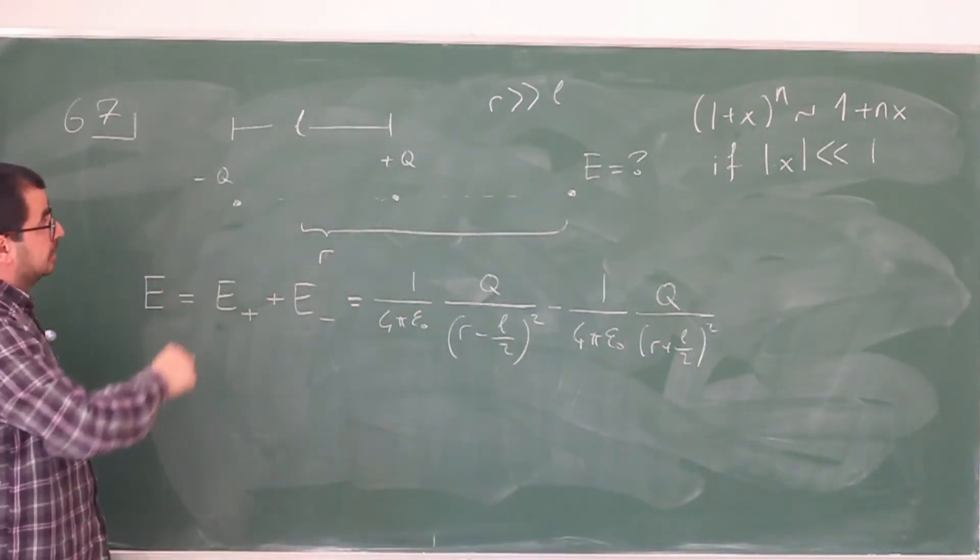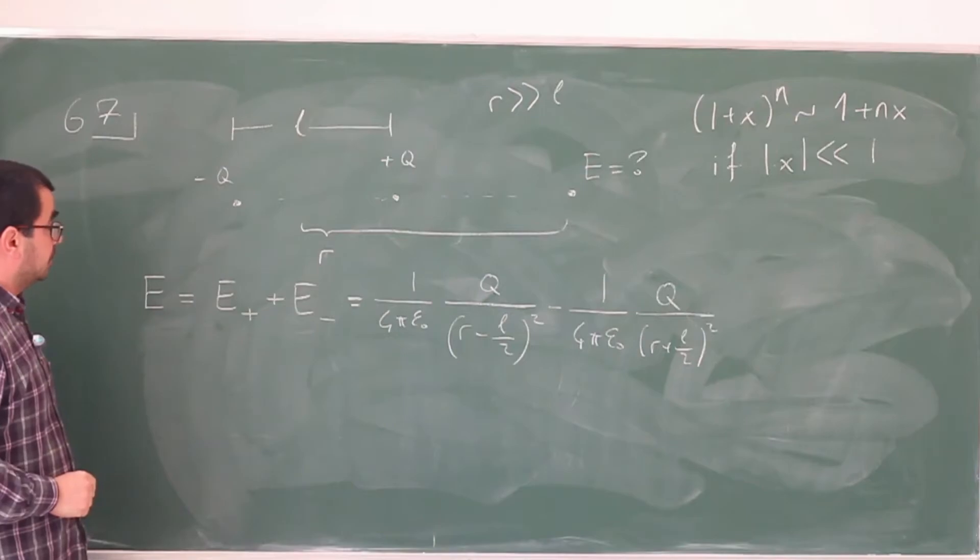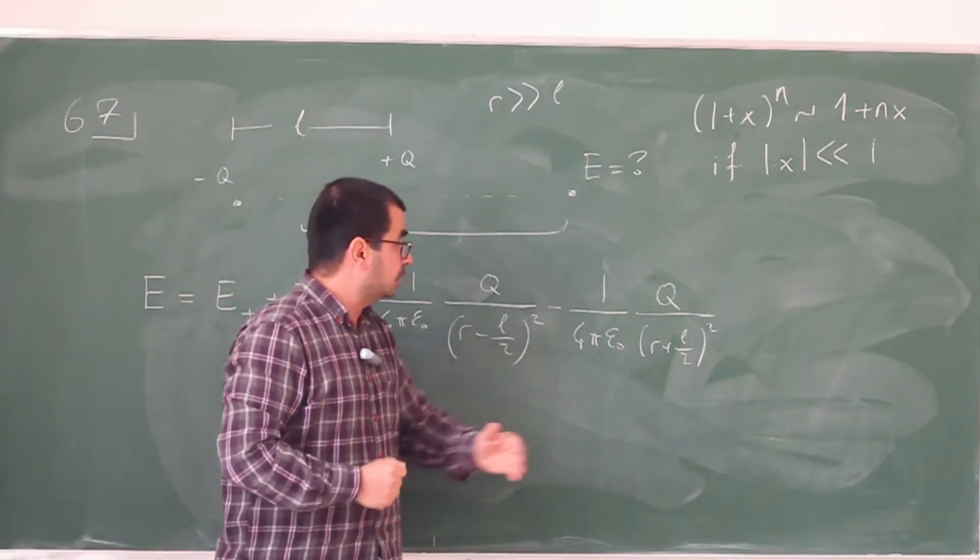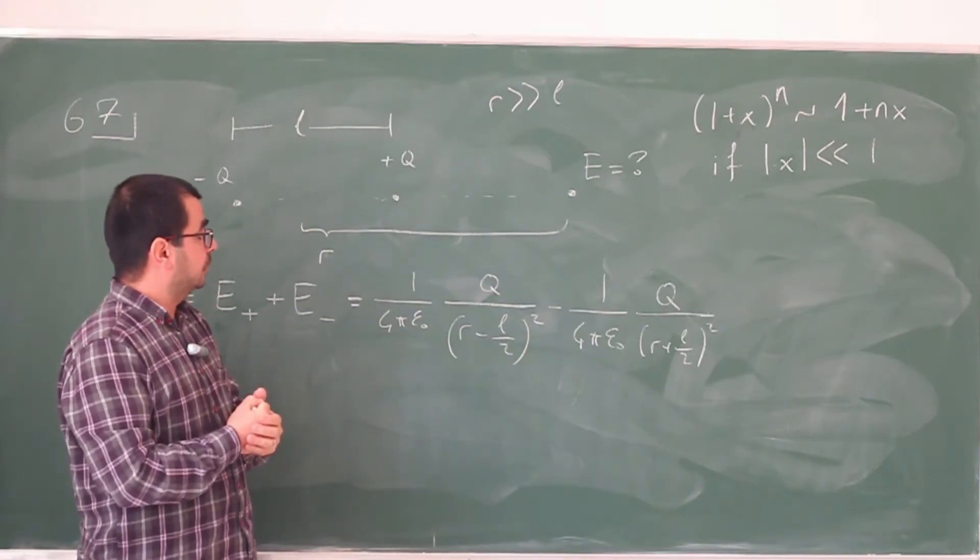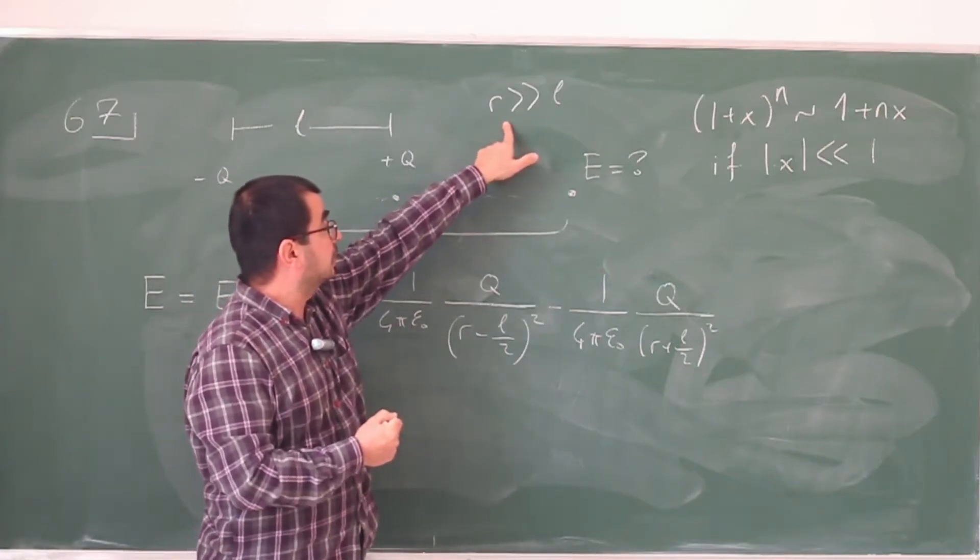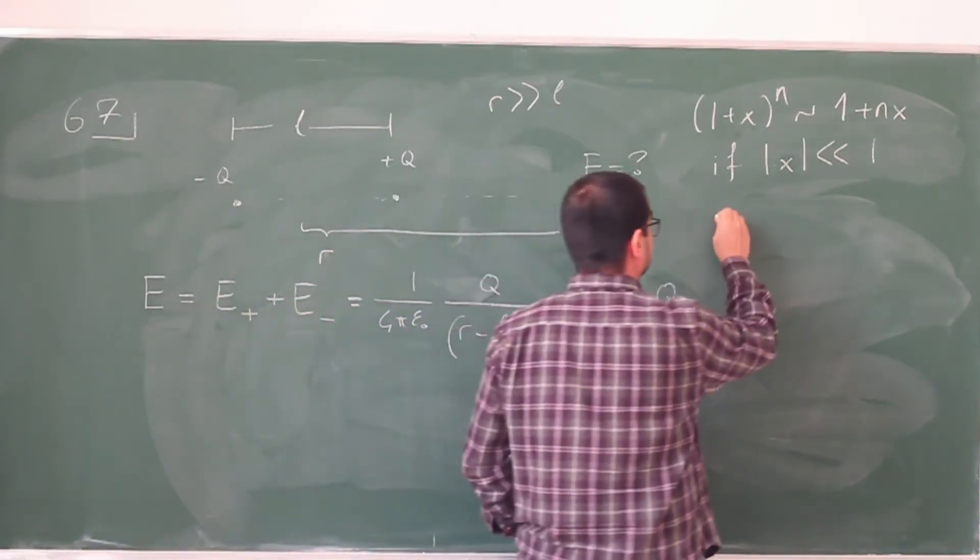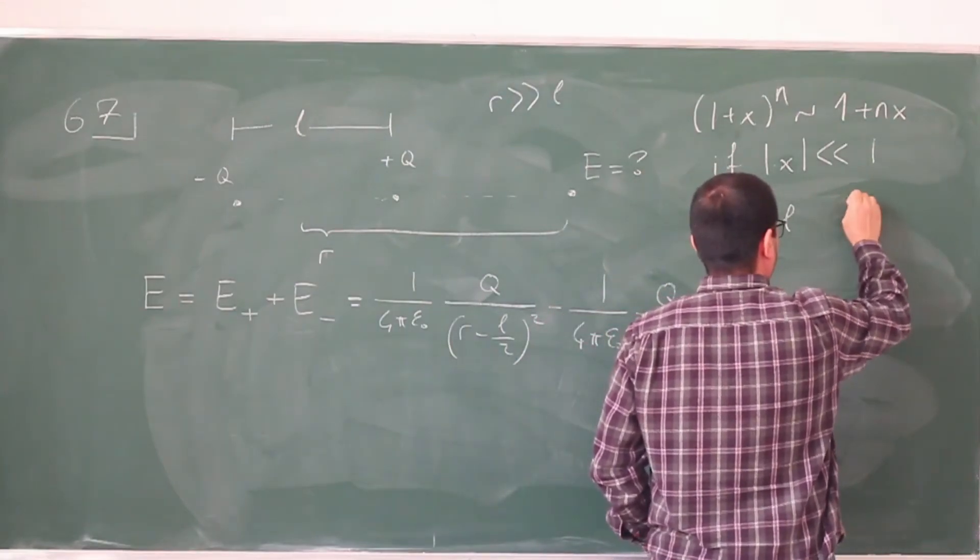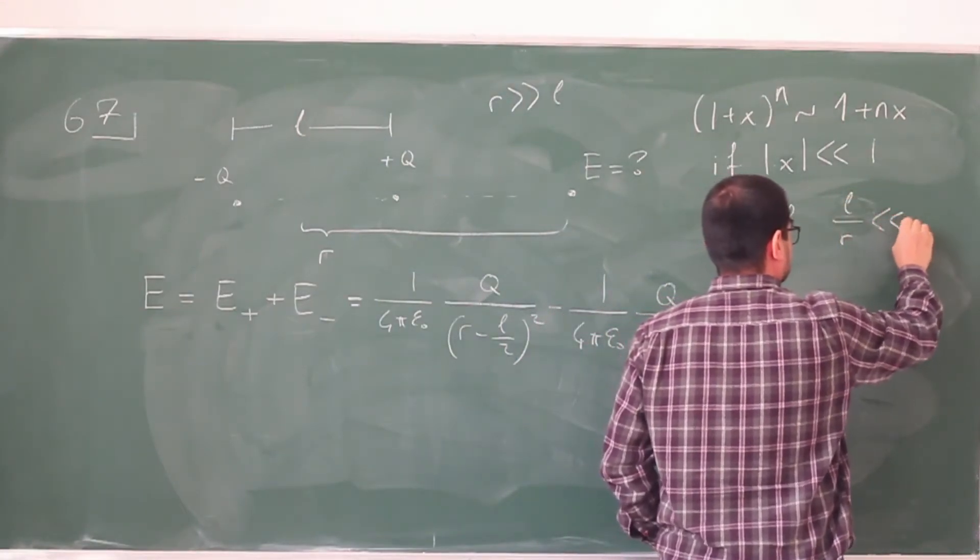Now, as I said, I want to utilize that approximation, binomial expansion. And to do that, I have to take these and turn them into a form 1 plus a small number. So to do that, if this is correct, if r is much larger than L, then L over r is much smaller than 1. So I want to get an expression like this.